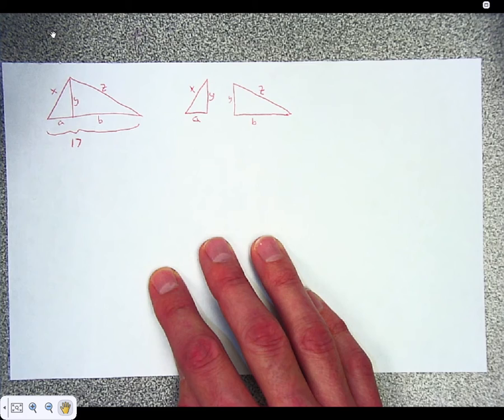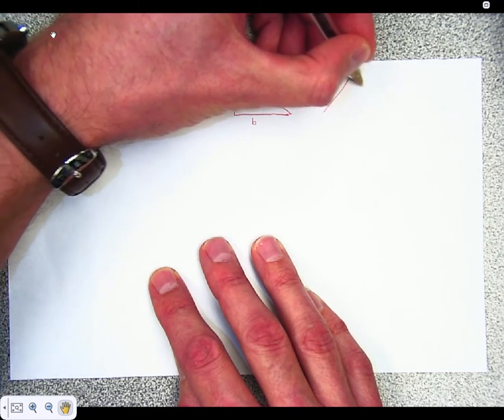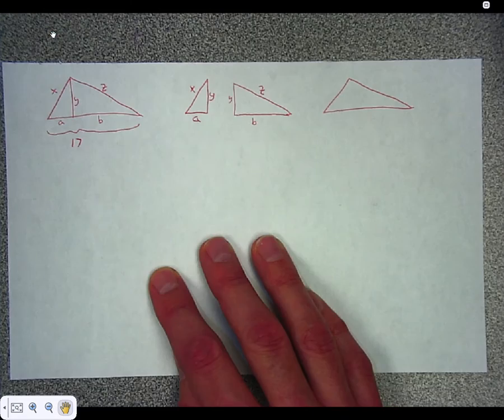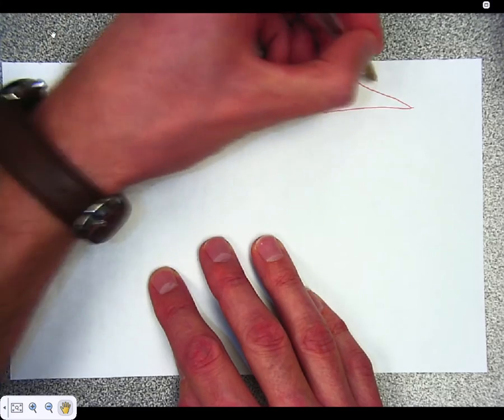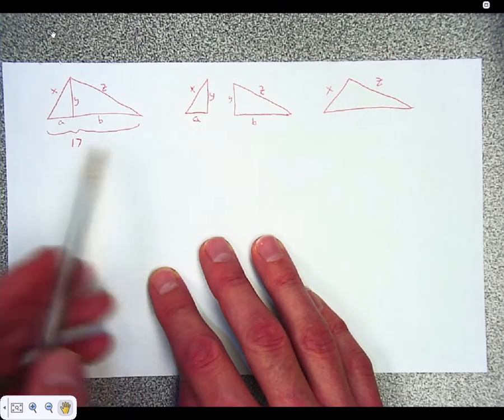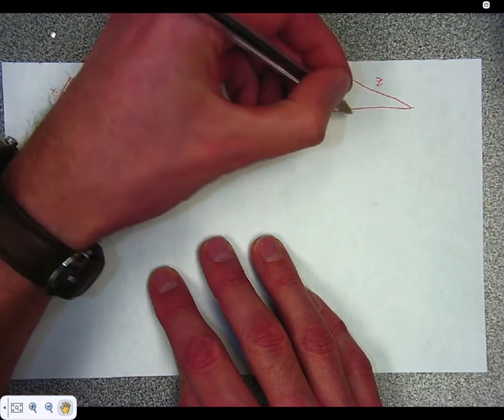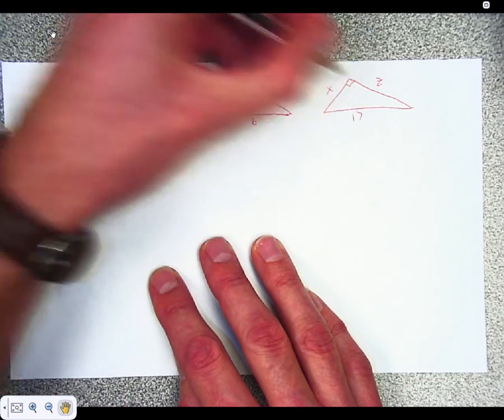And there's the big triangle. And I'm going to, yeah, no, I'm going to leave it just like this. Close enough. X, Z. I'm not going to put a B on the bottom because I know how long that side is. The bottom is 17. All right, here we go.